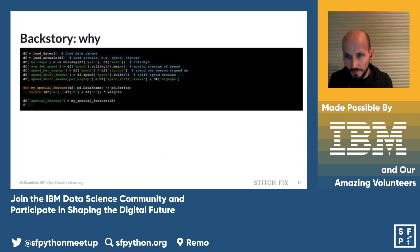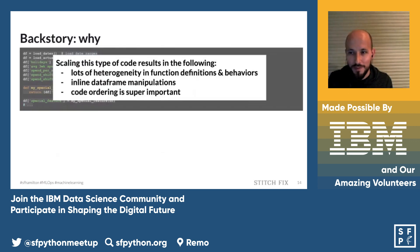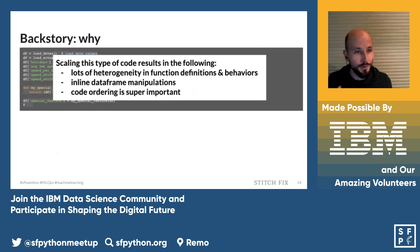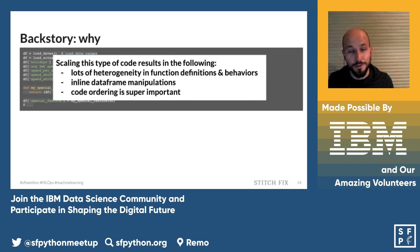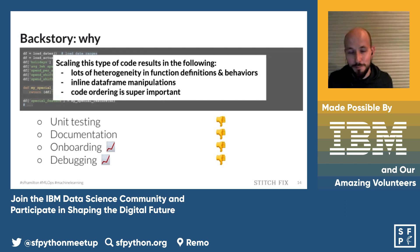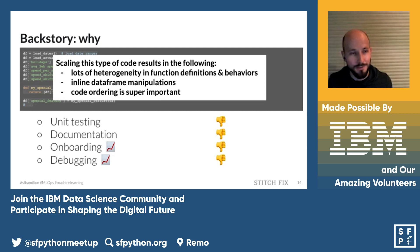If you scale this code to thousands of columns across a growing team over several years, it gets pretty nasty. With many different authors and different styles of writing functions, there's a lot of heterogeneity. Inline dataframe manipulations are succinct but not good for unit tests or documentation. Ordering is super important — swapping two lines could break something. This led to poor unit testing, hard documentation, and as the code base grew, onboarding became harder — the best person to debug something was whoever had been on the team longest.